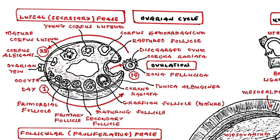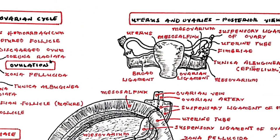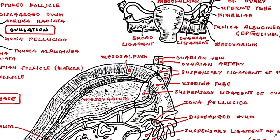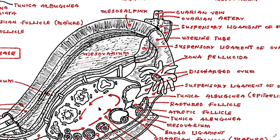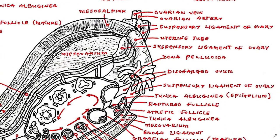In the event of a pregnancy, the corpus luteum will support the developing embryo or fetus for up to three months with these secretions. However, if fertilization does not occur, the corpus luteum will degenerate into a scar formation known as a corpus albicans. The part of the broad ligament spread over the ovary is called the mesovarium, and the part spread over the uterine tube is called the mesosalpinx. The ovary is supplied by the ovarian artery and drained by the ovarian vein. The suspensory ligament of the ovary, also called the infundibulopelvic ligament, is a fold of peritoneum extending from the ovary to the walls of the pelvis.